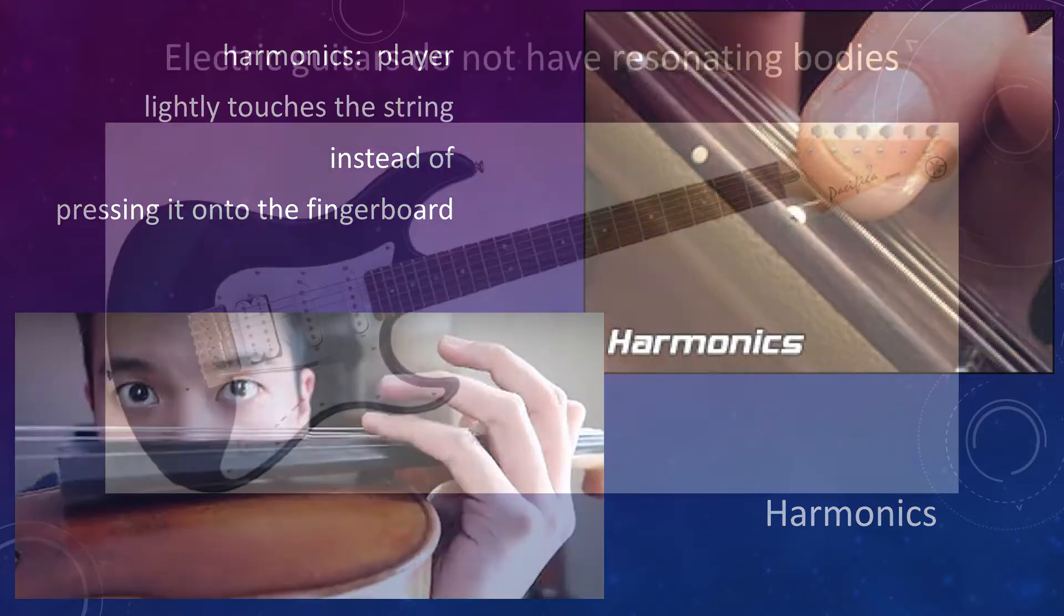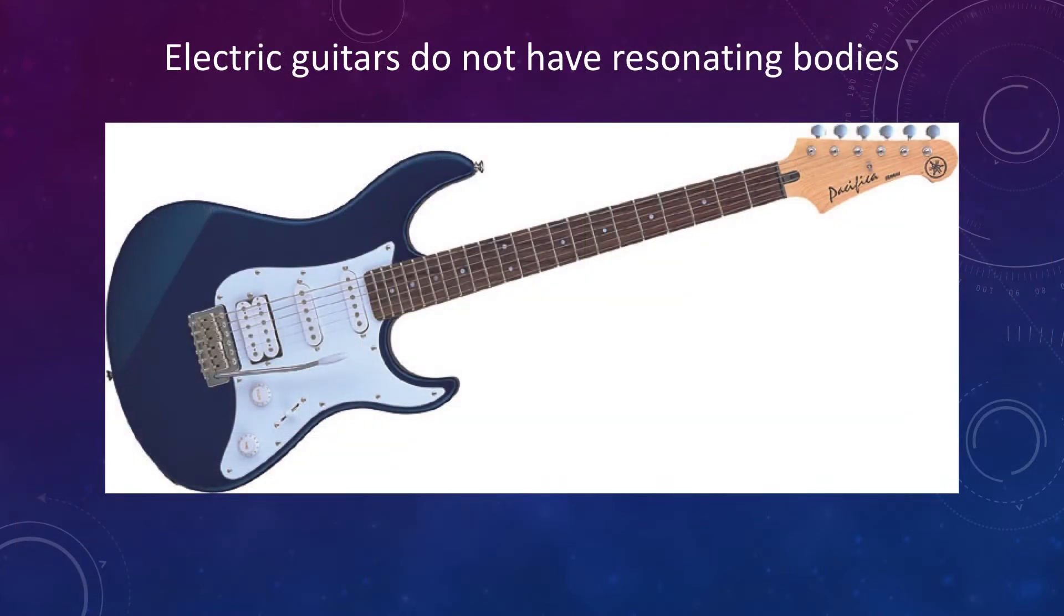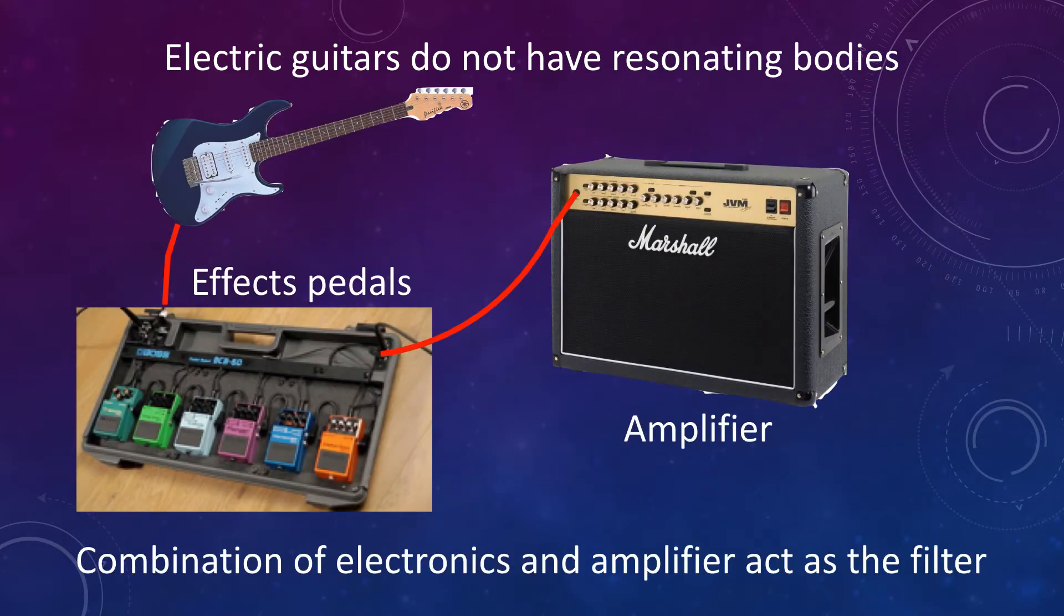Electric guitars and electric bass guitars do not have hollow bodies, so they do not have resonating bodies. They depend on electronics and amplifiers to modify and amplify the sound of the vibrating strings.